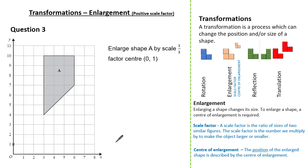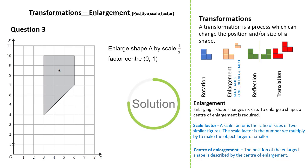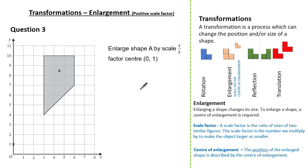Moving on to another question: enlarge shape A by a scale factor of one third, with the center of enlargement at (0, 1). See if you can give it a go and press pause if you need. Using the same method, let's look at one vertex at a time. From the center of enlargement, we've gone three to the right and three up to reach the first vertex. With a scale factor of one third, we multiply by one third, giving us one to the right and one up as our new vertex.